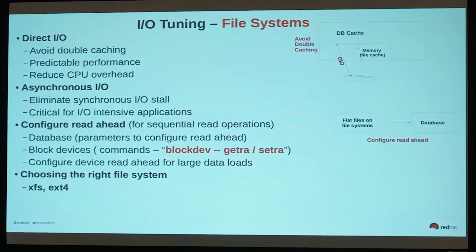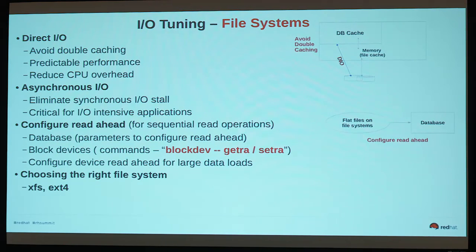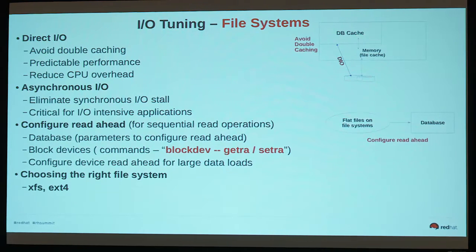For file systems, the main thing now is to avoid double caching by using DirectIO and AsyncIO. Most databases do it anyway these days. Oracle is one database where you still have to explicitly set filesystem IO options to SETALL — if you don't, it will use cached IO, and since most databases have their own cache you don't want memory caching twice. Asynchronous IO is almost the default for all databases. For bulk load activity, there is an option to modify your device read-ahead values using the blockdev command.